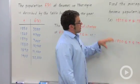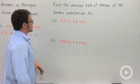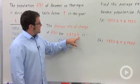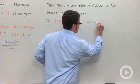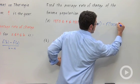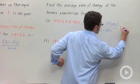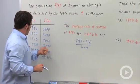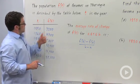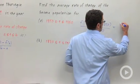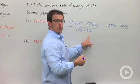Let's calculate the average rate of change of the gnome population on the interval between 1850 and 1880. So 1850 is going to be our a value, and 1880 will be our b value. We'll compute f of 1880 minus f of 1850, over 1880 minus 1850. In 1880 the population was 10,400, and in 1850 it was 3,200, divided by a 30-year difference — 30.